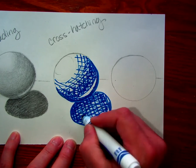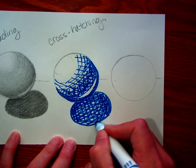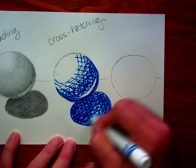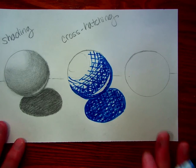So as I add more lines, that value is going to get darker and darker and darker, until it becomes almost a solid color. So then we have cross-hatching.